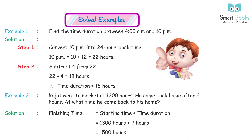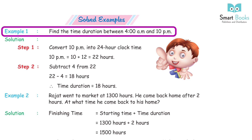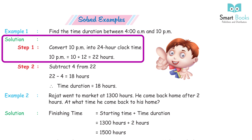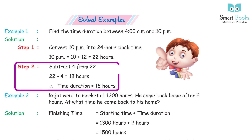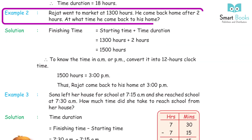Solved Example 1: Find the time duration between 4 AM and 10 PM. Solution: Step 1 — Convert 10 PM into 24-hour clock time: 10 PM = 10 + 12 = 22 hours. Step 2 — Subtract: 22 − 4 = 18 hours. Time duration = 18 hours.